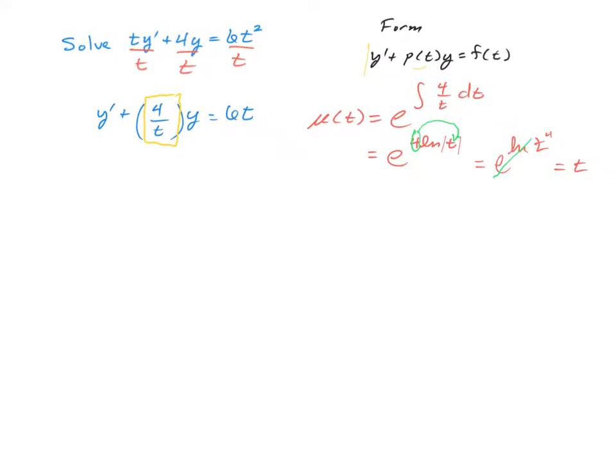All right, now the next thing you'll want to do with this integrating factor is multiply it on both sides of the differential equation. So we have our t to the 4th multiplied with our y prime plus 4 over ty. And that's equal to the same t to the 4th multiplied by the existing 6 times t on the right-hand side.